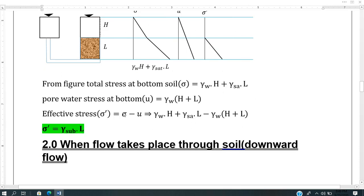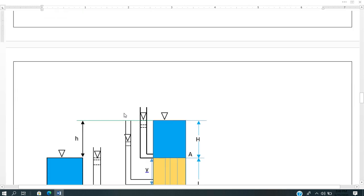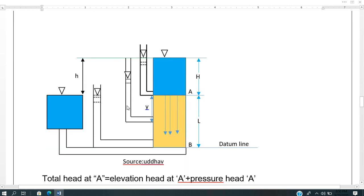Now the second case is downward flow condition. In downward flow condition, inflow or outflow is constant.